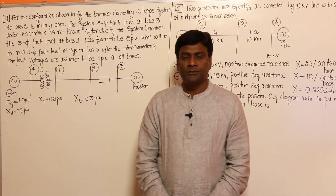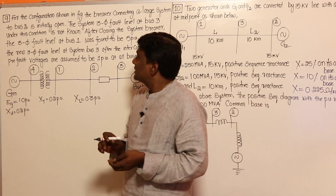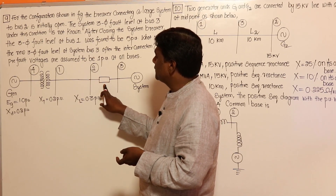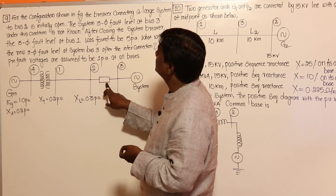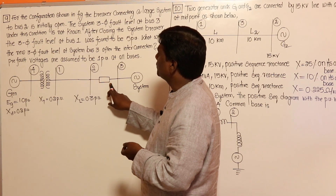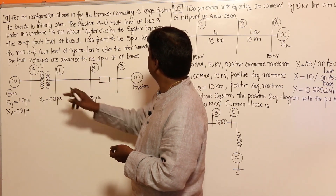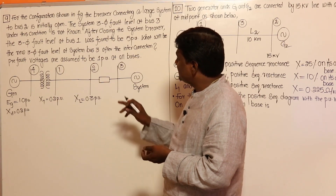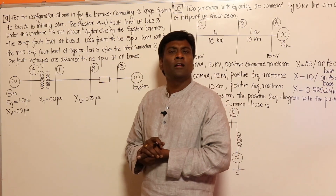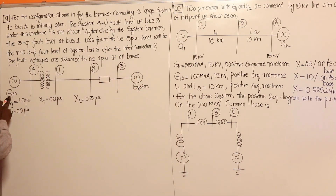Now let's look at three old GATE questions which are simple but worth studying. In this question, the breaker connecting a large system to Bus 2 is initially open. The three-phase fault level at Bus 3 under this condition is not known. After closing the system circuit breaker, the three-phase fault level at Bus 1 was found to be 5 per unit. What will be the new three-phase fault level at Bus 3 after interconnection? Pre-fault voltages are assumed to be 1 per unit at all buses.